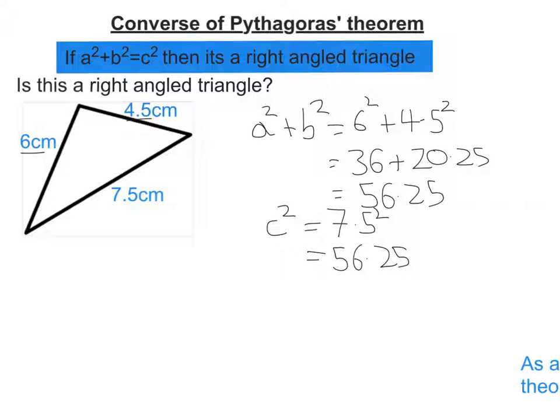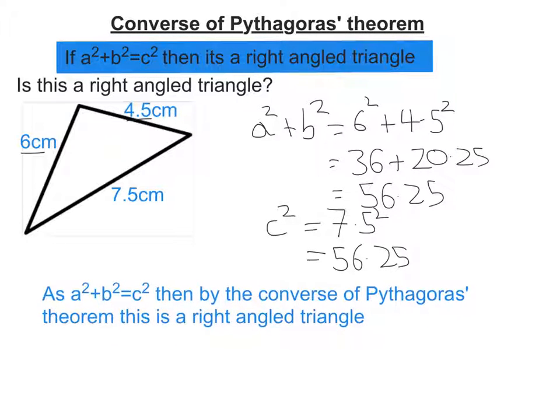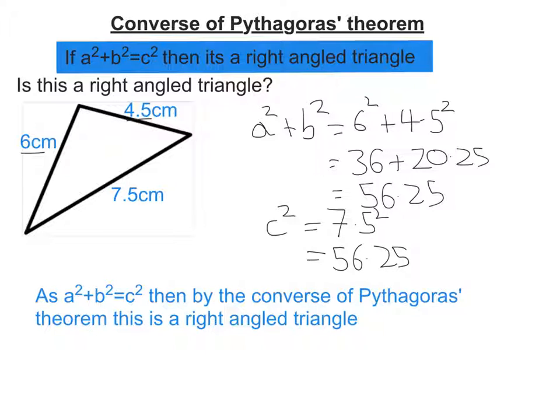So as A squared plus B squared equals C squared, then we've got a right-angled triangle. Now remember, we need to show that and communicate that to our examiner, and we'd have to write, as A squared plus B squared equals C squared, then by the converse of Pythagoras' theorem, this is a right-angled triangle.